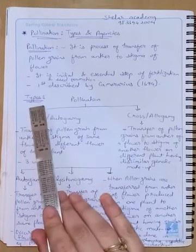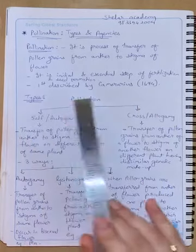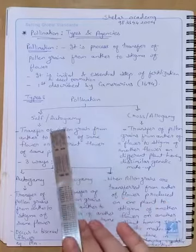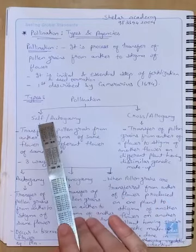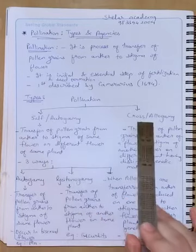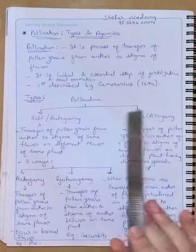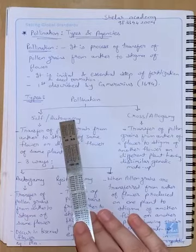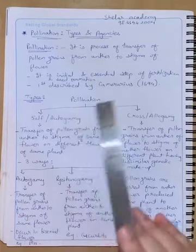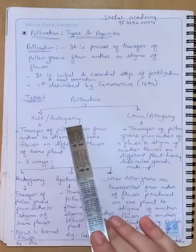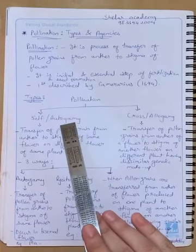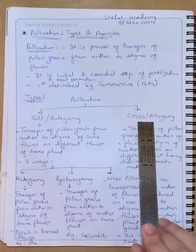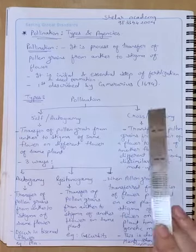There are two main types of pollination: self-pollination and cross-pollination. Self-pollination is also called autogamy — 'auto' means within the flower. Cross-pollination is called allogamy, where pollen grains fall into another flower.